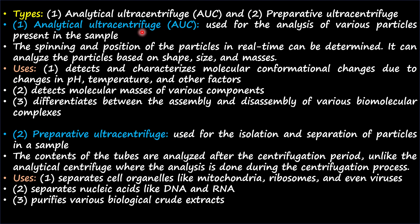Analytical ultra centrifuge, or AUC, is basically used for the analysis of various particles present in the sample. The speed and position of the particles in real time can be determined — that means while the ultra centrifuge is working, you can identify what is going on inside the machine. It can analyze particles based on shape, size and mass.